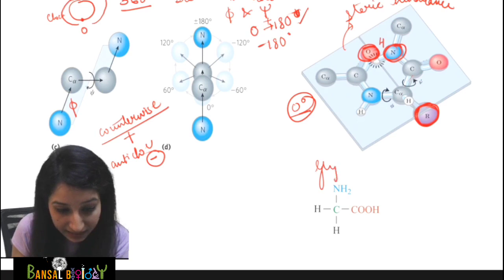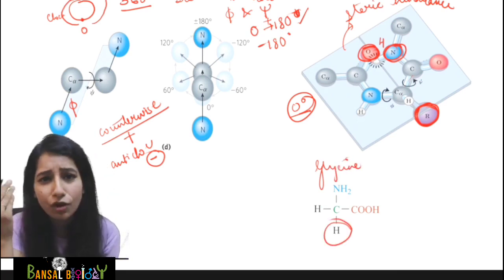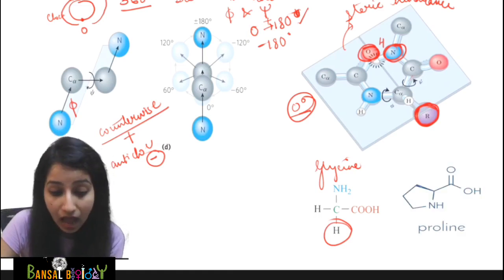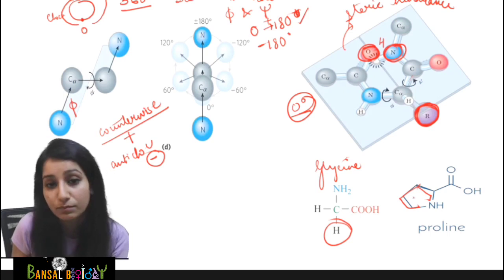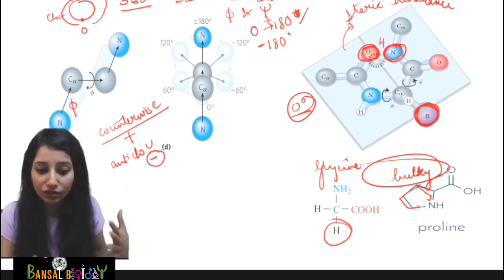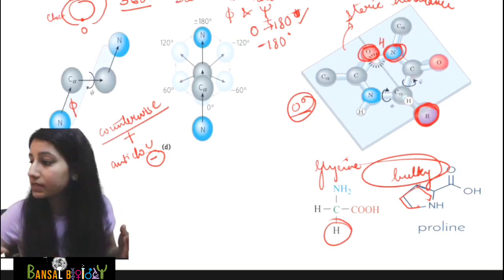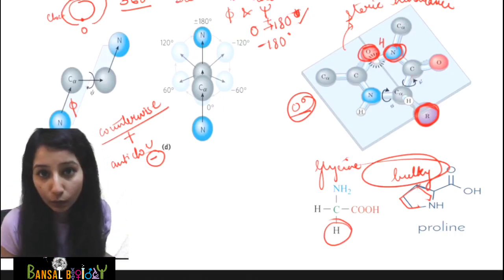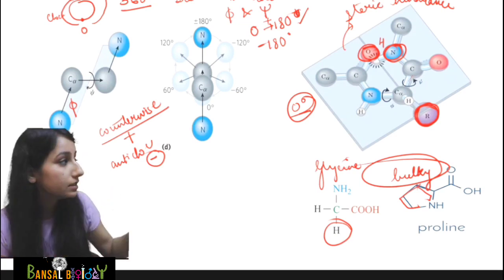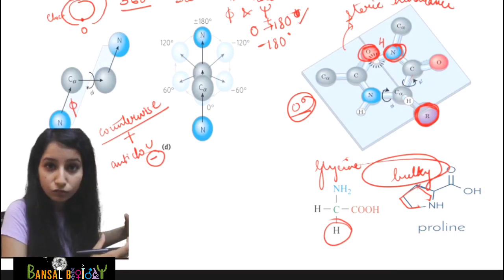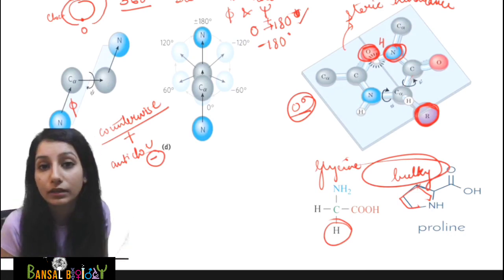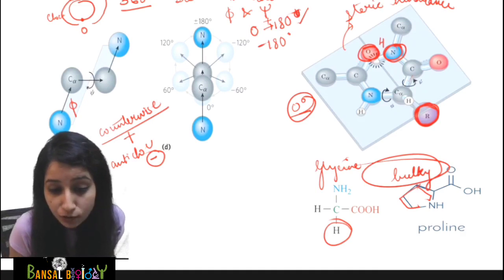For example, in the case of glycine, the side chain is only H. It won't cause steric hindrance — glycine says 'I have no problem, I will rotate freely.' But proline has a cyclic side chain which is very bulky, so it will say 'I will not rotate.' So two things cause steric hindrance: one is backbone atoms, and the second is the R side chain.